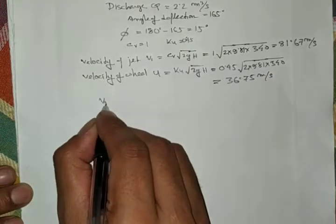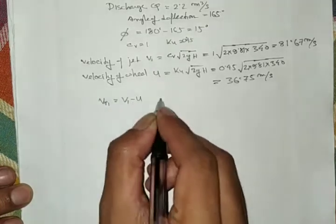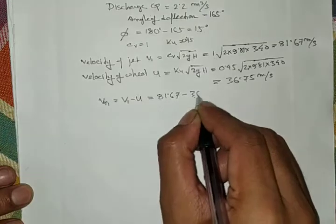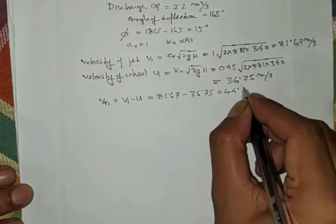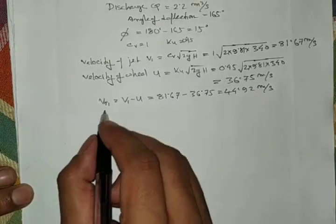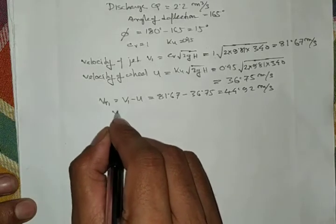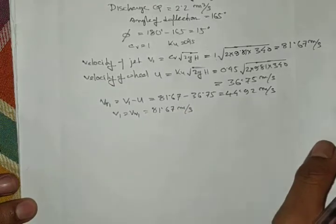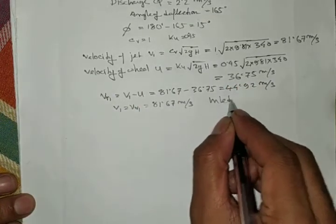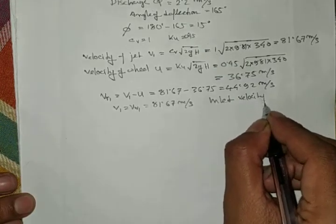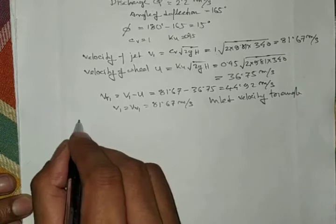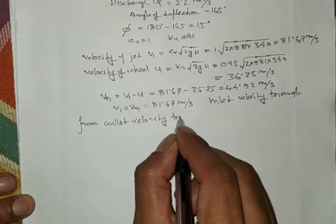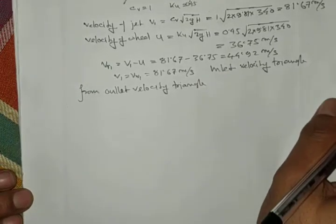From the inlet velocity triangle, Vr1 = V1 − u = 81.67 − 36.75 = 44.92 m/s. And V1 = 81.67 m/s.